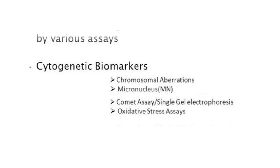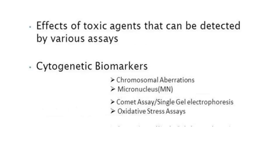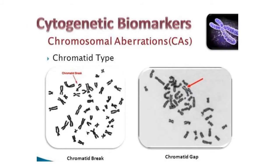The effect of toxic agents can be detected by various assays like chromosomal aberrations, micronucleus, comet assay, and oxidative damage. Due to various chemical agents, there will be breaking of chromosomes and reattachment to some other chromosome, resulting in abnormal proteins that do not follow the normal apoptotic pathway.